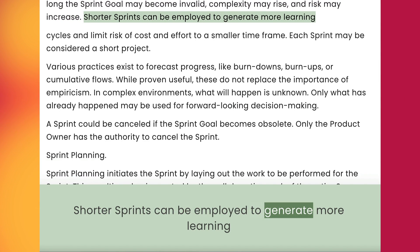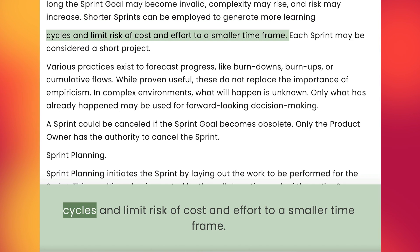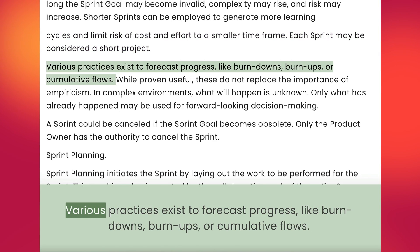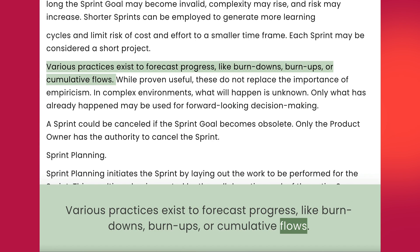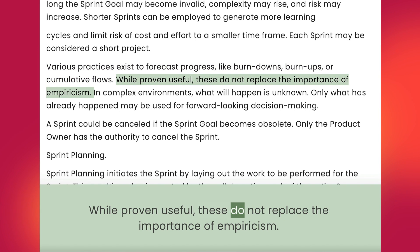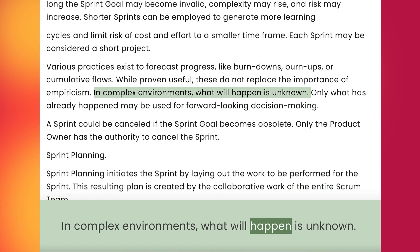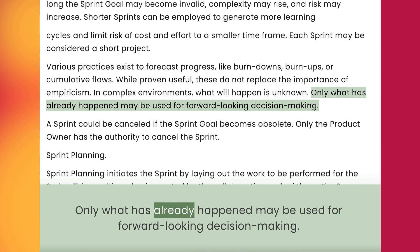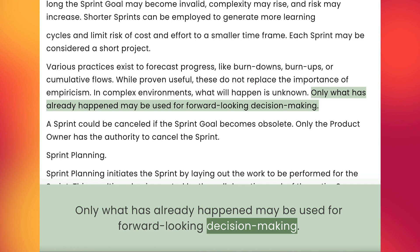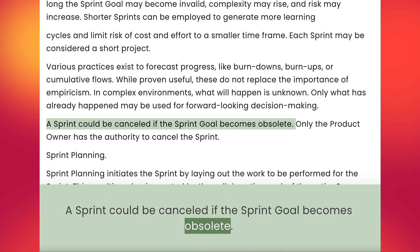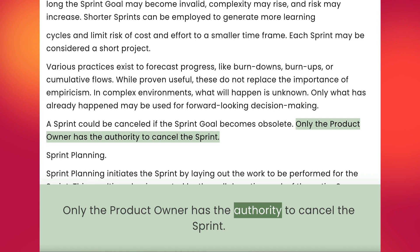Shorter sprints can be employed to generate more learning. Cycles limit risk of cost and effort to a smaller time frame. Each sprint may be considered a short project. Various practices exist to forecast progress, like burndowns, burnups, or cumulative flows. While proven useful, these do not replace the importance of empiricism. In complex environments, what will happen is unknown; only what has already happened may be used for forward-looking decision making. A sprint could be cancelled if the sprint goal becomes obsolete. Only the product owner has the authority to cancel the sprint.